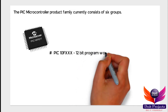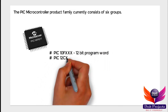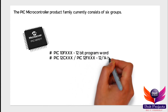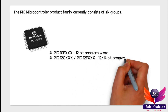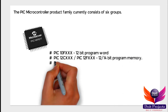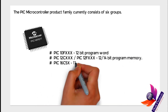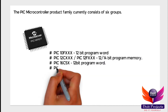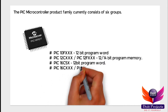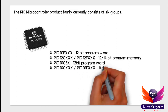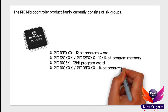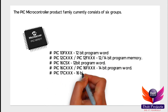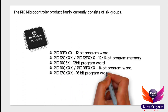The PIC 10Fxxx microcontroller can take a 12-bit program word. The second one is PIC 12Cxxx or PIC 12Fxxx, which has 12 or 14-bit program memory. The third one is PIC 16C5x, which can take a 10-bit program word. The fourth one is PIC 16Cxxx or PIC 16Fxxx, which can take a 14-bit program word.